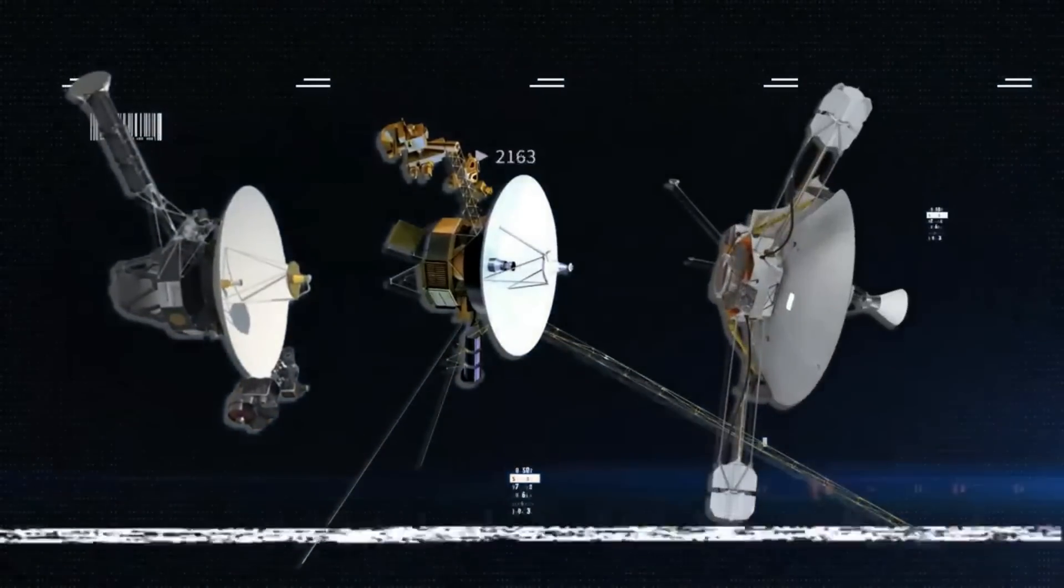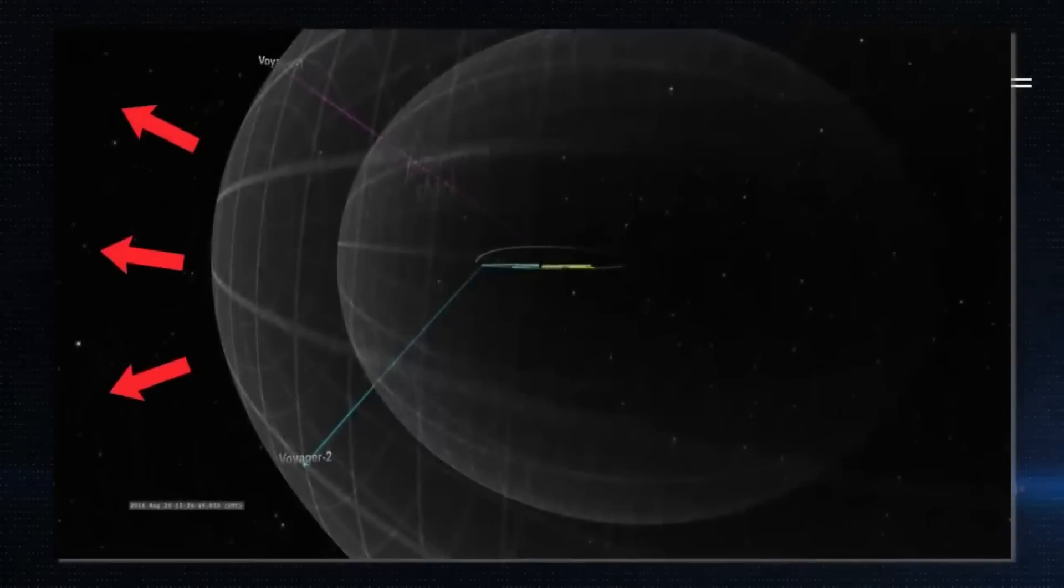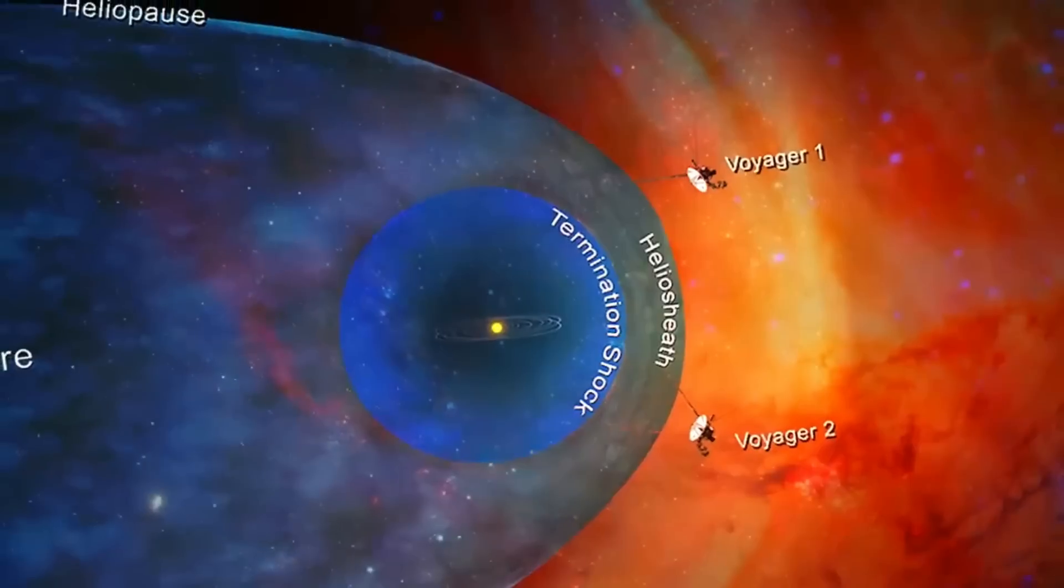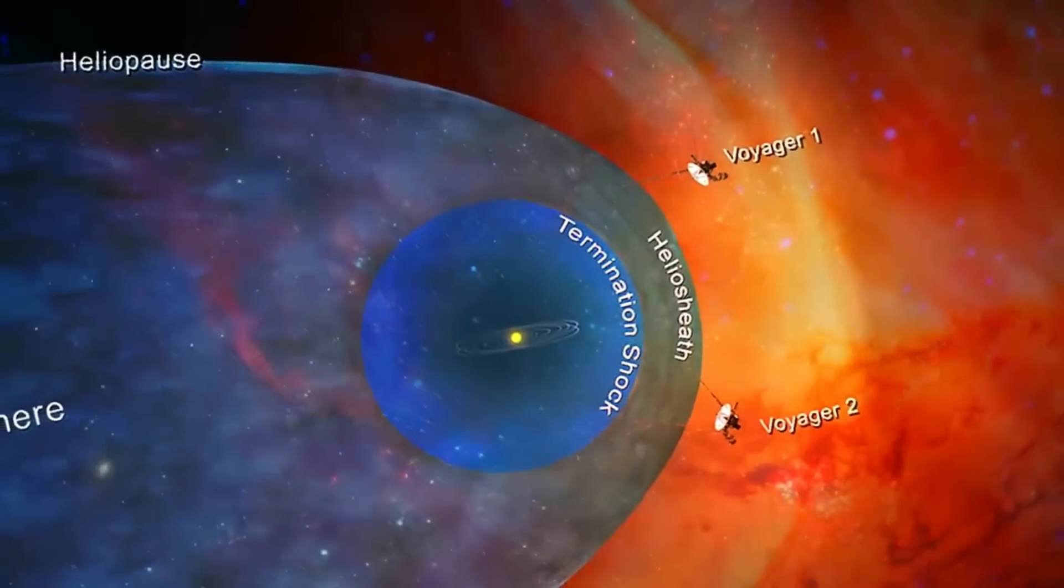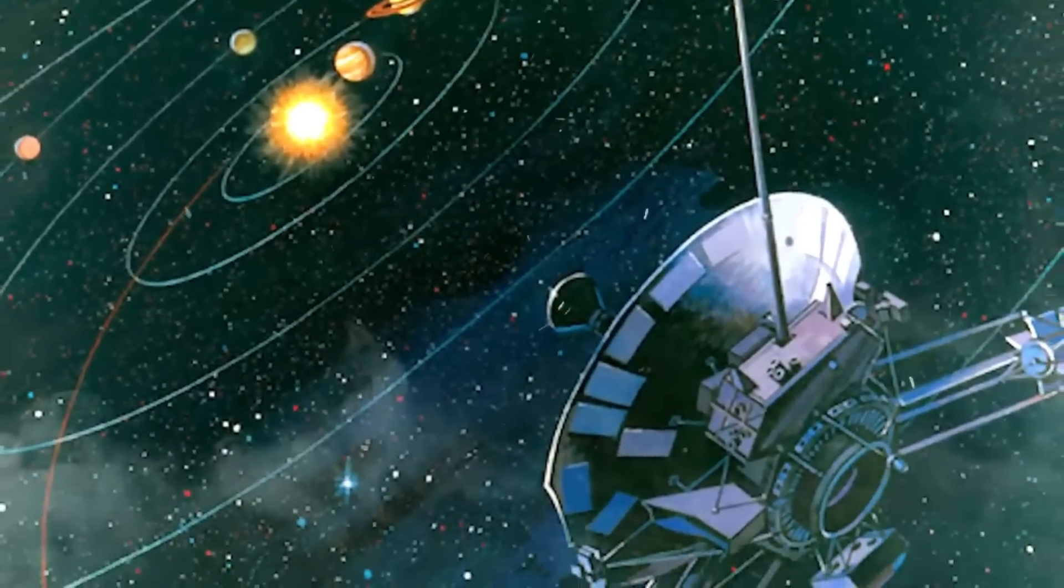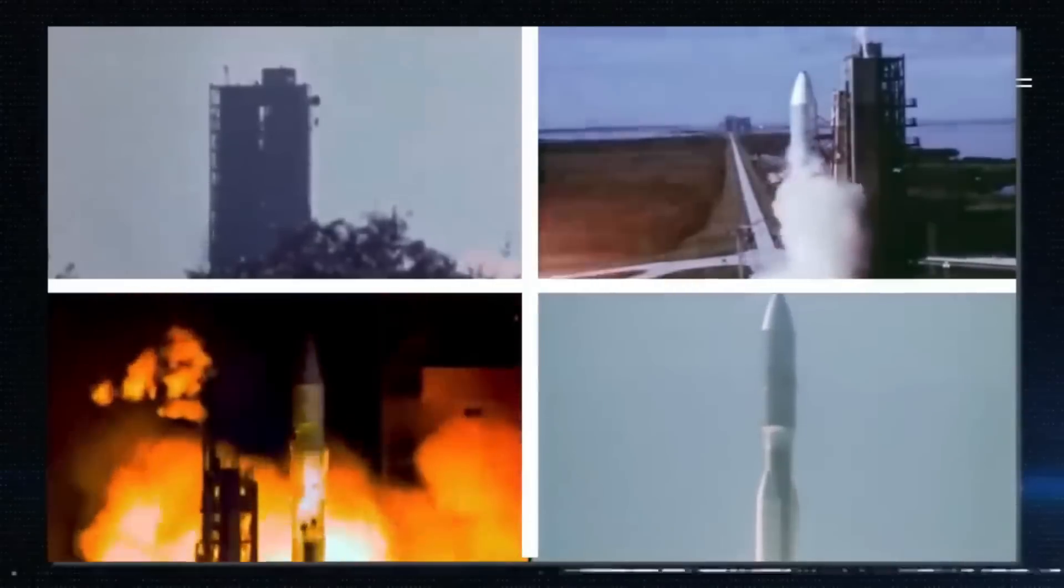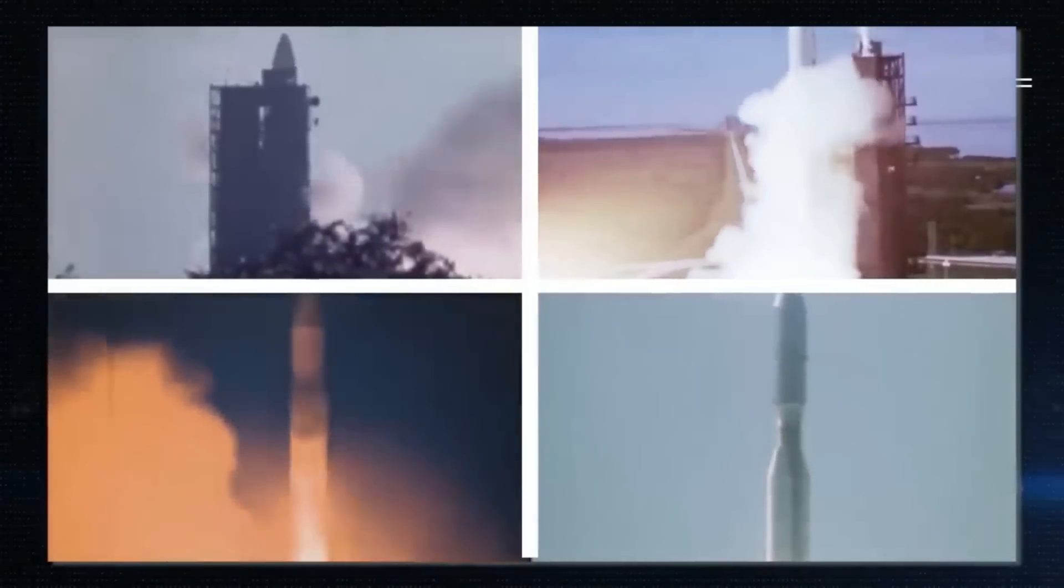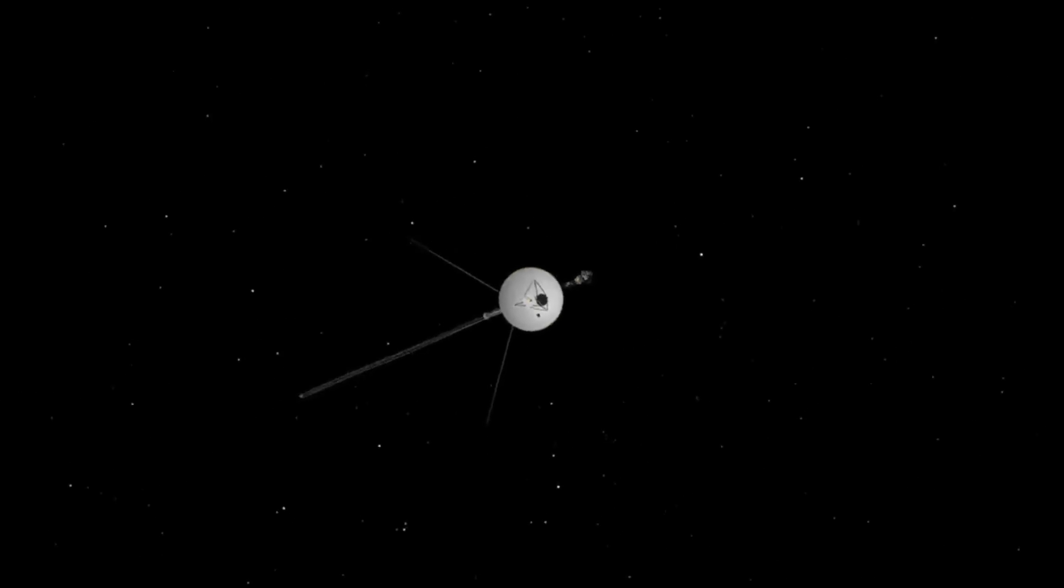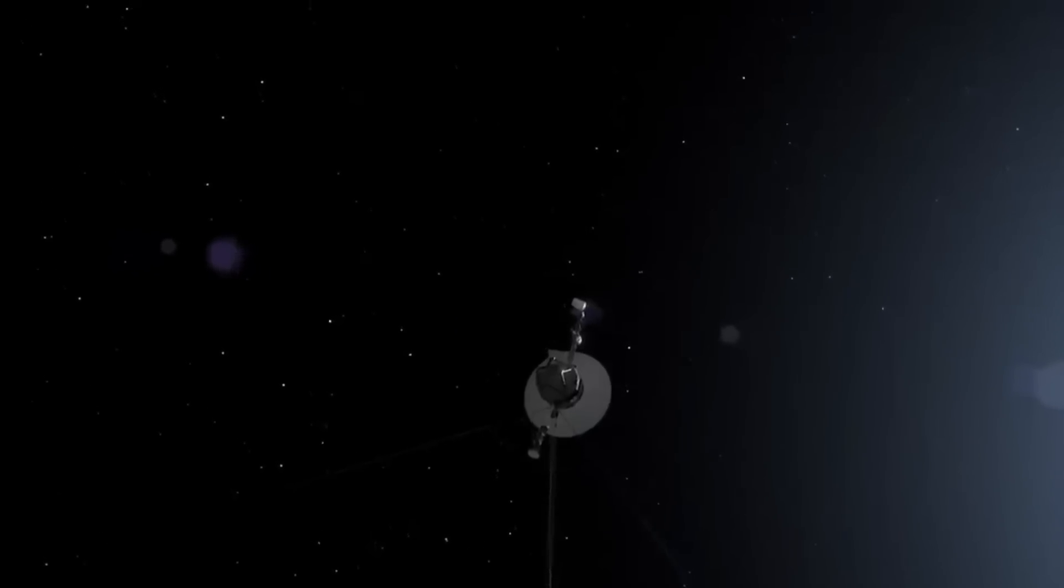Voyagers 1 and 2 and Pioneer 11 were all heading in the direction of the solar apex, which is where the Sun seems to be going in the Milky Way galaxy. Because of this, it was thought that they would get to the heliopause before Pioneer 10, which was heading towards the heliospheric tail. In the 1970s, four satellites were sent into space to find out more about the universe outside of the solar system. After 21 years, in November 1998, the non-essential instruments were turned off. At that point, only seven instruments were still working.